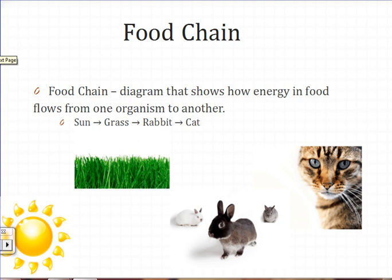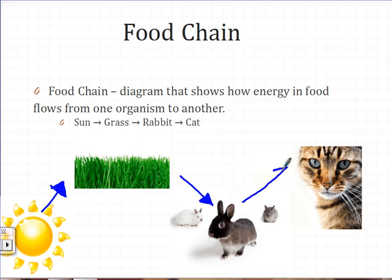A food chain is a diagram that shows how energy and food flows from one organism to another. Here we have energy from sunlight going to the plants — the grass — through photosynthesis. The energy from the grass goes to the rabbit as the rabbit eats the grass. The energy from the rabbit goes to the cat as the cat eats the rabbit. This is a food chain.